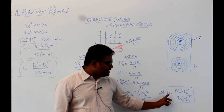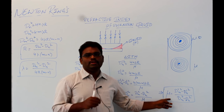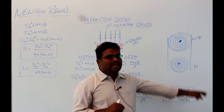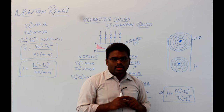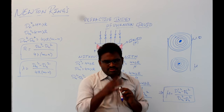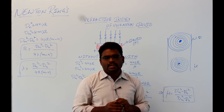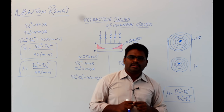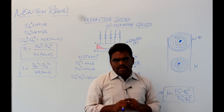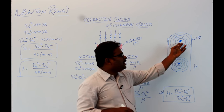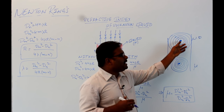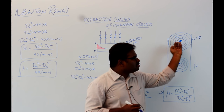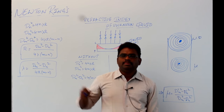One must remember: in the reflected case, the central spot is dark; in the refracted case (viewing from the bottom of glass plate P), the centre is bright. The colour of the bright rings also depends on the monochromatic source used — for example, a yellow source gives dark, yellow, dark, yellow alternating rings — and all rings come closer together as you move from the centre outward.